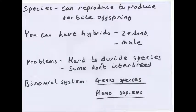A species is a group of organisms that can reproduce to produce fertile offspring. Humans can interbreed with each other and produce fertile babies — the 'fertile' part is important. Some species can interbreed with other species, for example zebras and donkeys produce zedonks, horses and donkeys produce mules, but these are infertile animals, which means they are not a species.